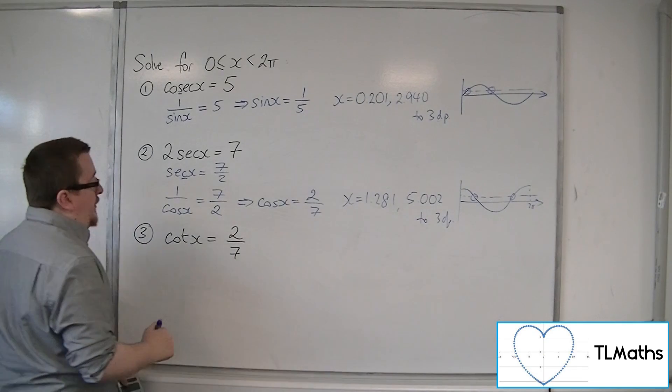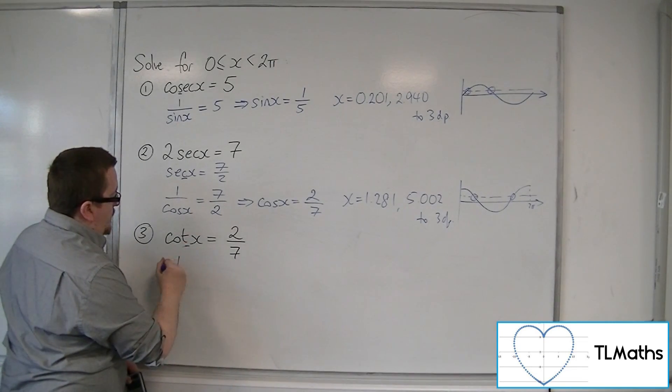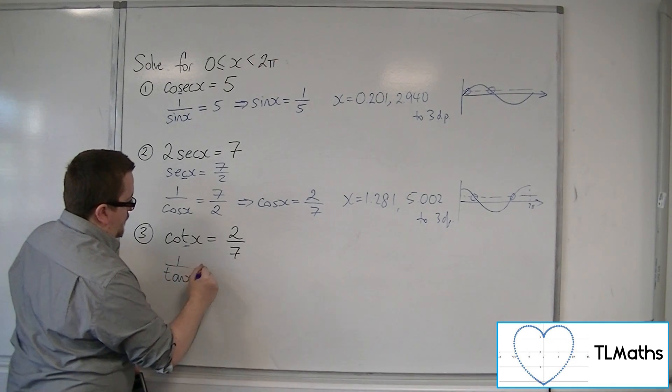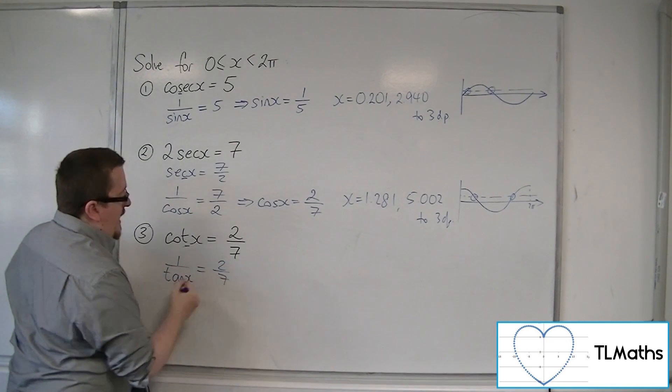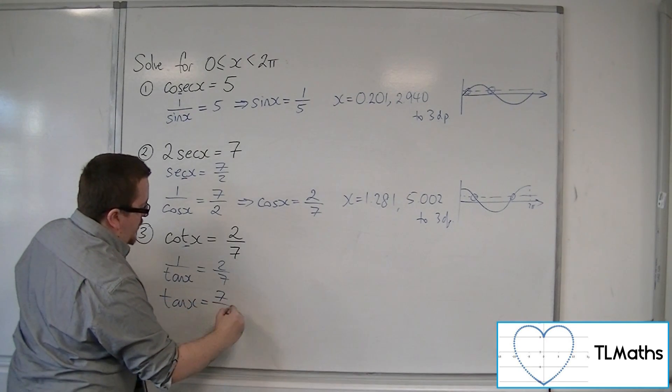So finally with cot x is 2 sevenths. Cot 1, 2, 3 is 1 over tan. So 1 over tan is 2 sevenths. So tan x is equal to 7 over 2.